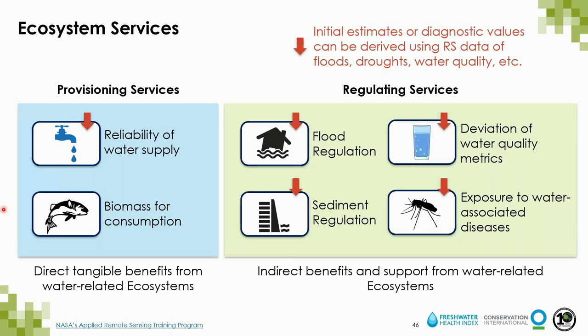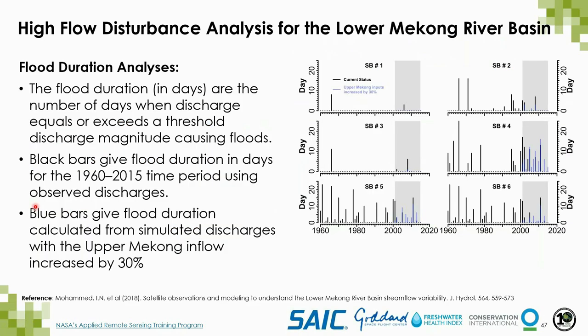For a number of these indicators, area and duration affected are both suitable for initial estimates to be derived from satellite-based observations or from models developed using such data, depicted here with a red arrow. As an example for more in-depth analysis, flood duration work by John and Ibrahim from NASA Goddard — who have been helping in the lower Mekong — uses the same hydrological model forced by in-situ and satellite-based observations to evaluate changes to flood duration and thus gain or loss of flood regulation services from changes to flow conditions.